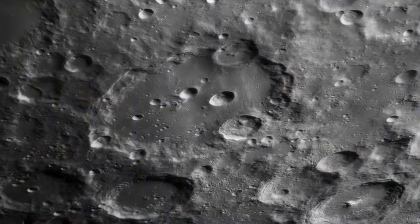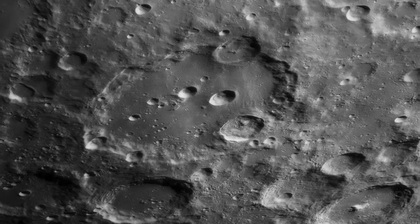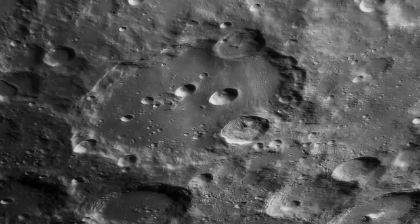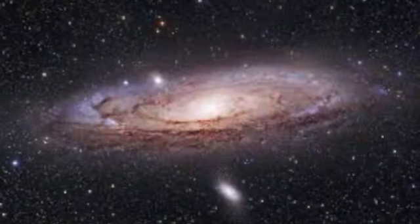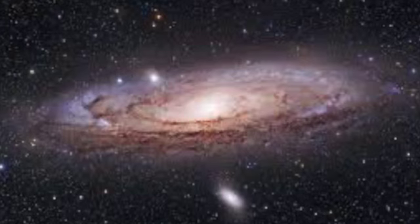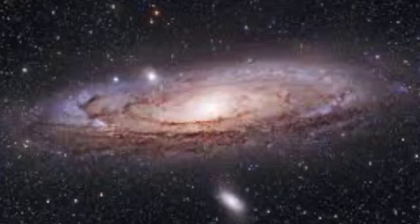Craters on the Moon are evidence of the collisions it experienced in the early universe. The result was that several early planets were thrown out into deep space. The remaining debris was pelted against the planets.